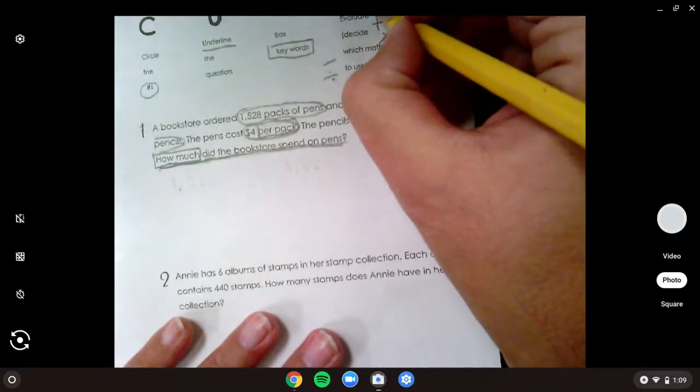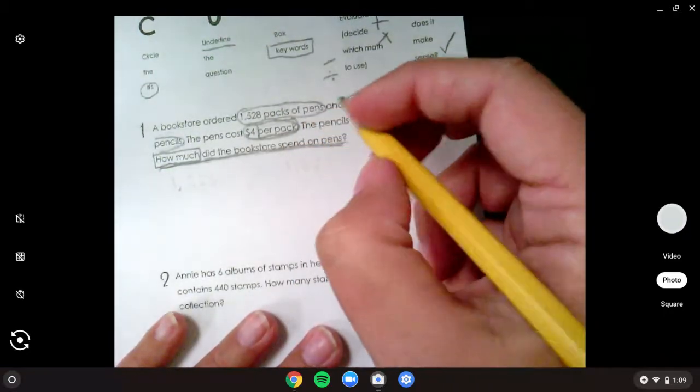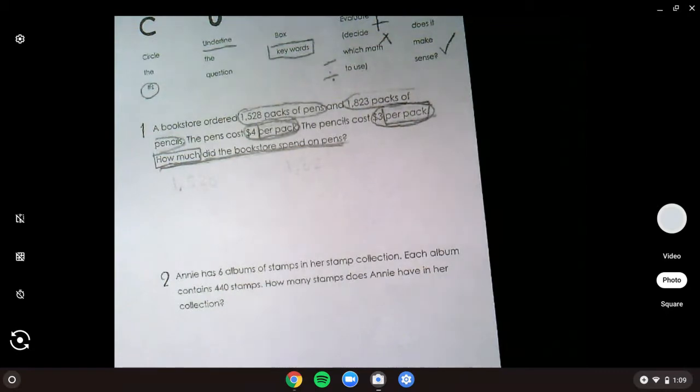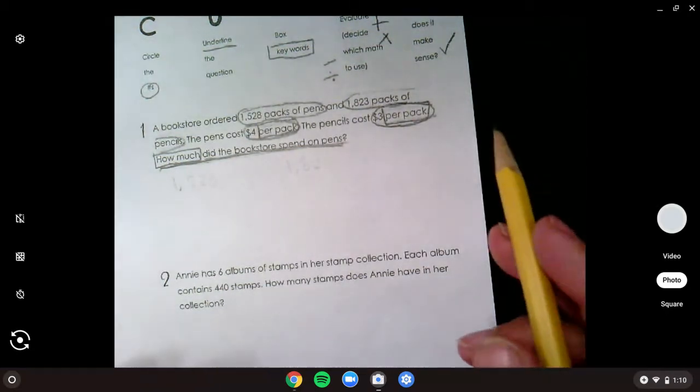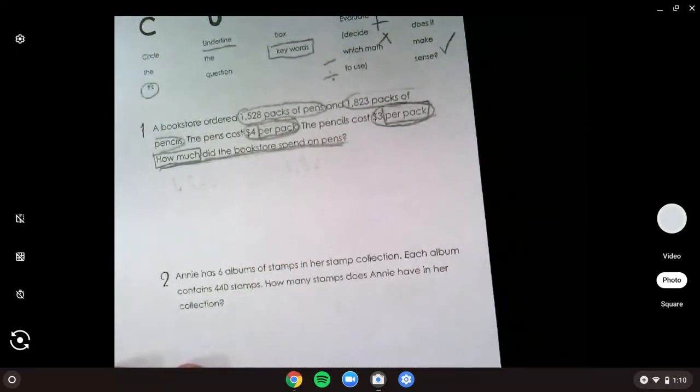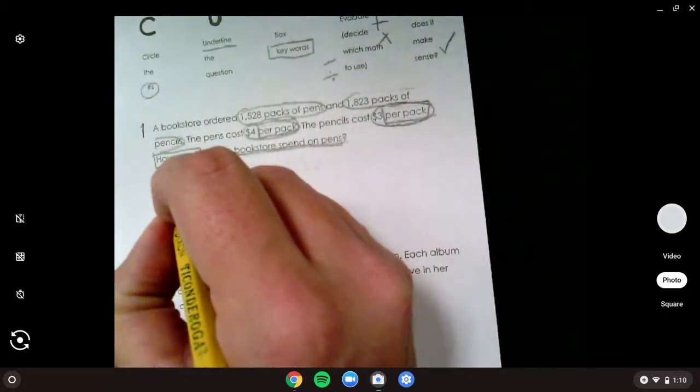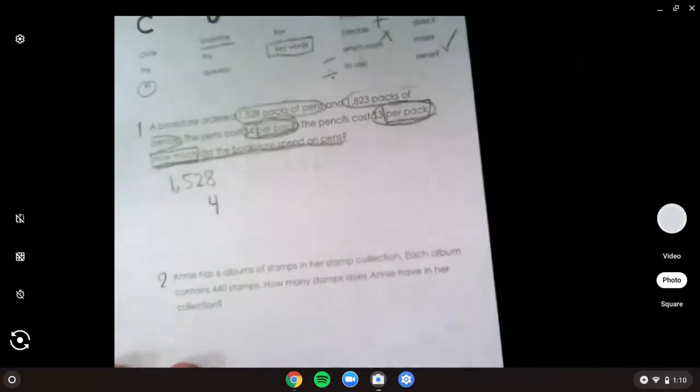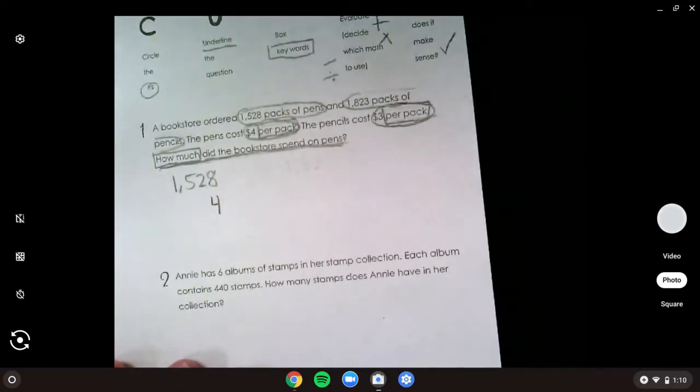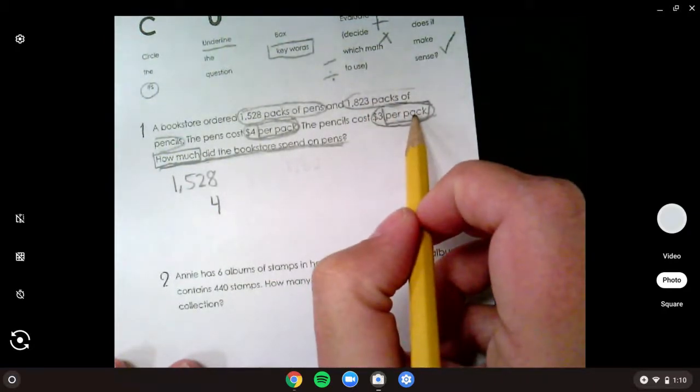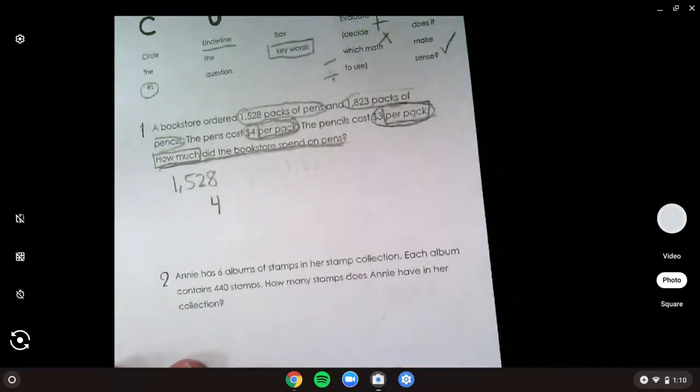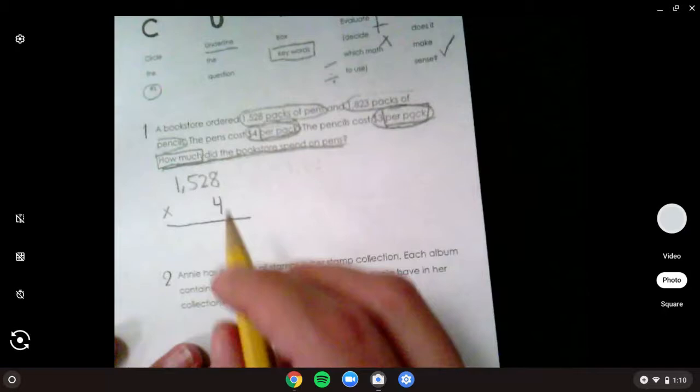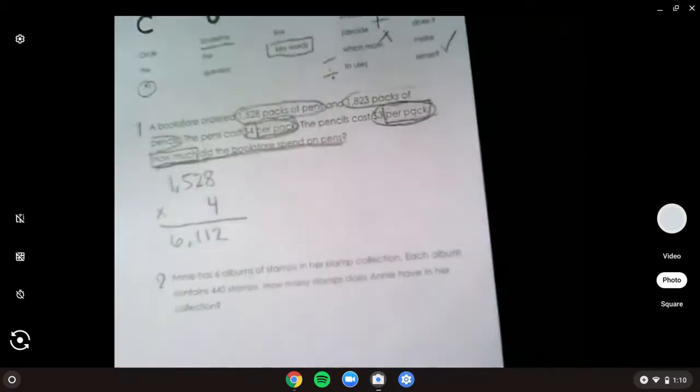Now we need to evaluate. Because we found that per pack keyword, that told us we needed to multiply. What are we trying to find though? Because they gave us pens and pencils. They gave us a lot of information. Amelia? How much did the bookstore spend on pens? On pens. So which numbers are we going to use to help us then? Bennett? $1,528 and $4. $1,528 and we know we're going to use that $4, right? What does the $3 go with? It went with the pencils, didn't it? Do these numbers help us at all? They don't. Sometimes they give us too much information to try and confuse us. So we know we're going to multiply. If we go through and do all of our multiplication, we should get 6,112.